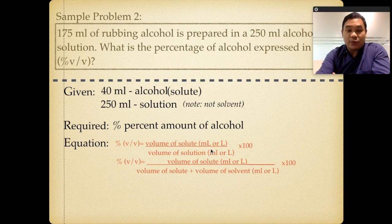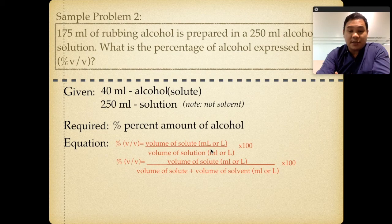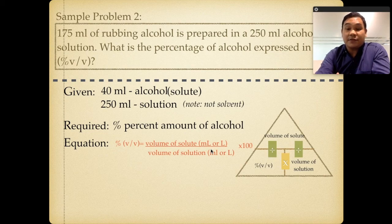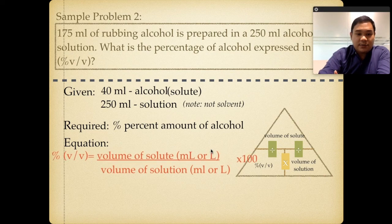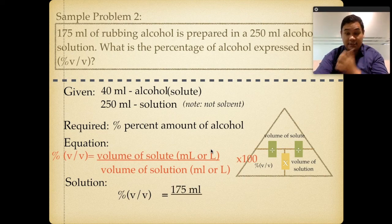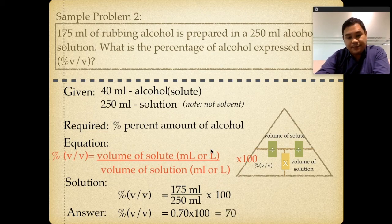Since we are working with volumes, we replace units with mL or liters. We use equation 1: percent V/V equals volume of solute divided by volume of solution, times 100. Plugging in: 175 mL divided by 250 mL, times 100 equals 0.70 times 100, which gives 70% volume over volume alcohol solution.